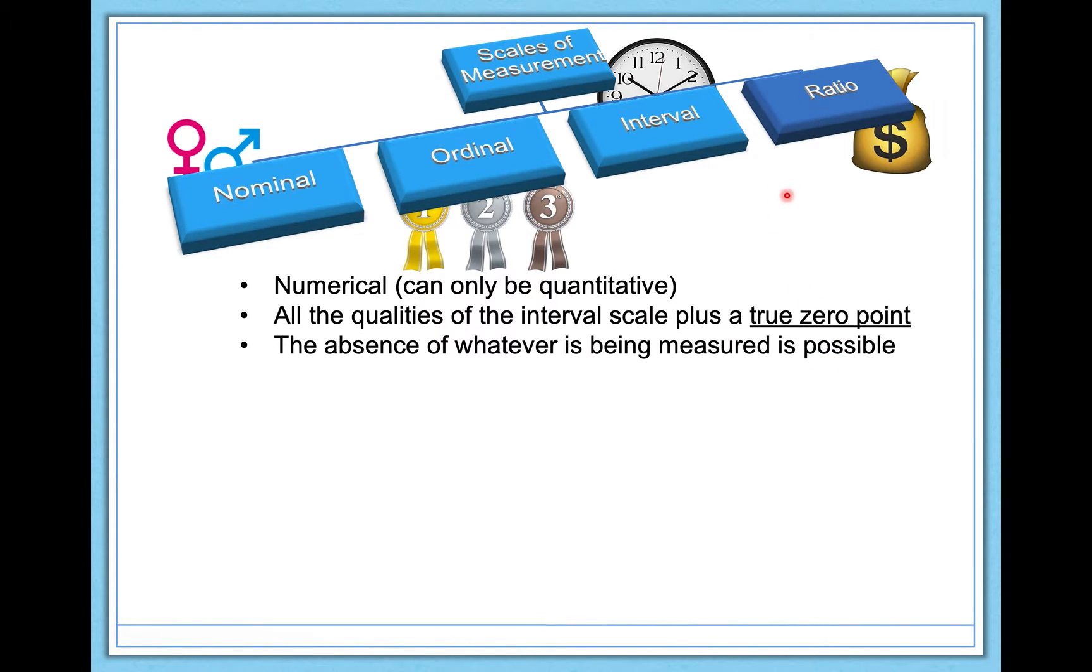You can think about zero degrees Fahrenheit. That's not the coldest possible. That doesn't mean a complete absence of heat. Zero doesn't really mean zero there, and so it's not ratio. Degrees Kelvin, in contrast, has that absolute zero point. Zero means zero. There's nothing colder than it. There's no lower quantity than that. And that's what makes degrees Kelvin actually ratio. So both are ways of measuring temperature, but depending on how you measure that idea of temperature, it makes a difference on what scale of measurement you're talking about. And because of this quality of having this true zero point, the relationship between points is meaningful.